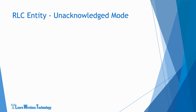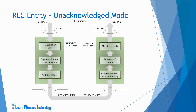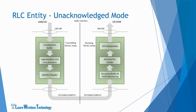Now let's look at the unacknowledged mode RLC entity model. The unacknowledged mode entity is configured to transmit or receive RLC PDUs through logical channels such as the downlink and uplink dedicated traffic channel, uplink common control channel, and multicast traffic and control channel. The PDU transmitted or received by the unacknowledged mode RLC entity is referred to as a UMD PDU. In unacknowledged mode, when the transmitting entity receives an RLC SDU from the upper layer, it performs segmentation or concatenation of the RLC SDUs so that the SDUs fit within the total size of the RLC PDU. The PDU size is indicated by the lower layer when it notifies a particular transmission opportunity.